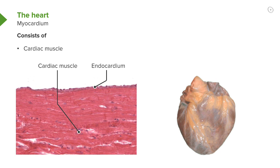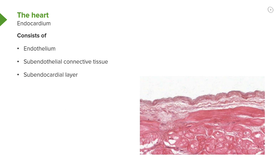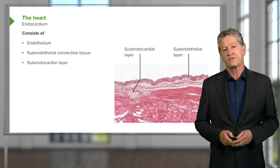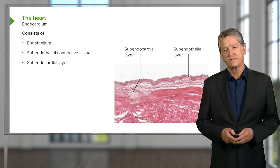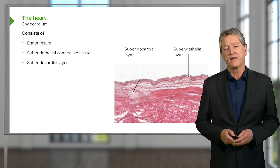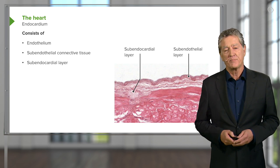The endocardium lines the internal chambers of the heart. Looking at the epithelium here — endothelium — it consists of a squamous epithelial cell lining that sits on a sub-endothelial layer of connective tissue, similar to a lamina propria in other organ systems. Sometimes there is also a third layer, the sub-endocardial layer of connective tissue, which separates the epithelial surface from the underlying cardiac muscle and protects the delicate endothelial surface from the vigorous activity of the pumping cardiac muscle.